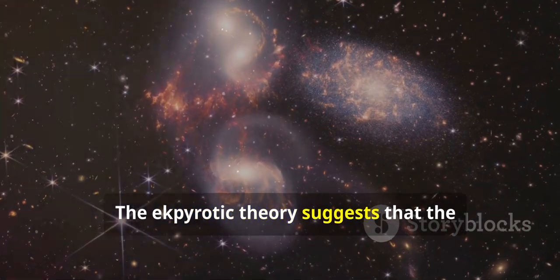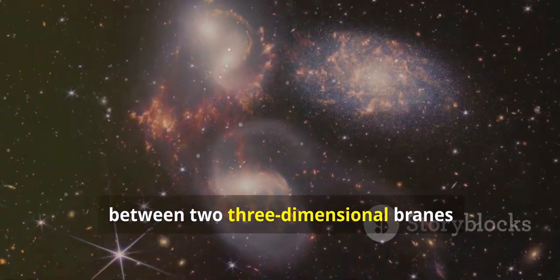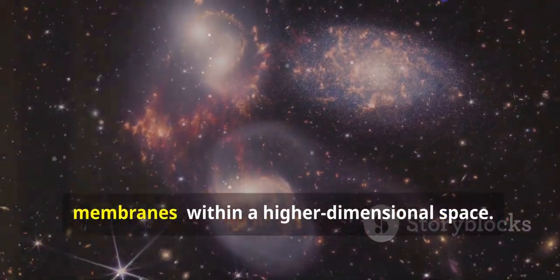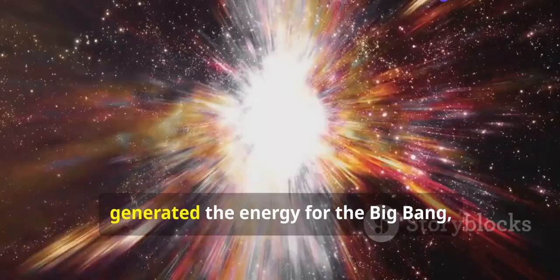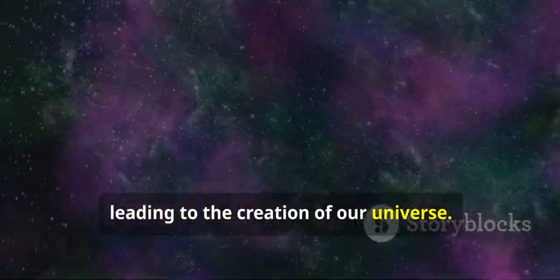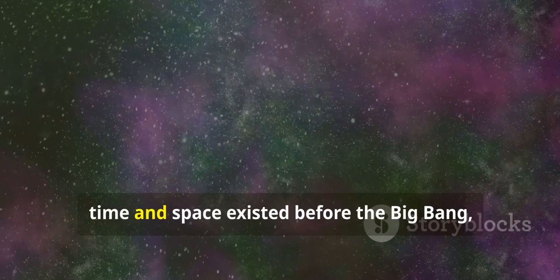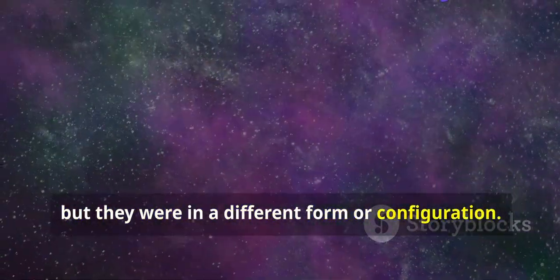The Ekpyrotic theory suggests that the Big Bang was the result of a collision between two three-dimensional branes within a higher dimensional space. The collision between these branes generated the energy for the Big Bang, leading to the creation of our universe. In this model, time and space existed before the Big Bang, but they were in a different form or configuration.